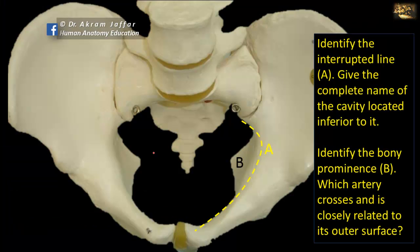Identify the interrupted line A and give the complete name of the cavity located inferior to it. This interrupted line is called the linea terminalis, formed by the pectineal line of the pubis and the arcuate line of the ileum, and it constitutes part of the pelvic brim. The pelvic brim separates the false pelvis above — which is part of the abdominal cavity — from the true pelvis below. The cavity below is called the true pelvic cavity, or the pelvis minor, or the obstetric pelvis.